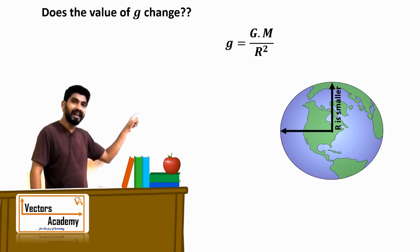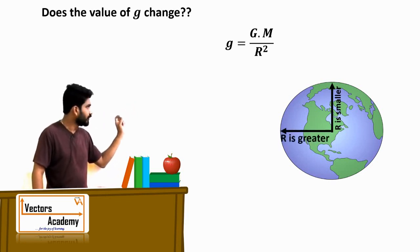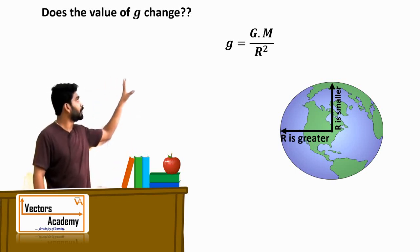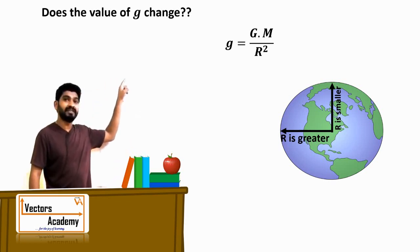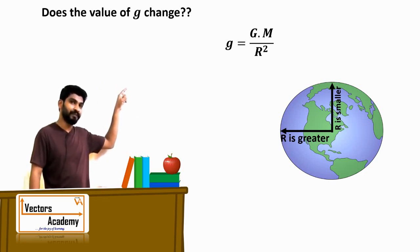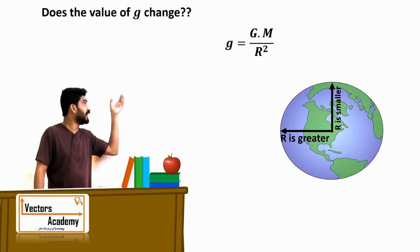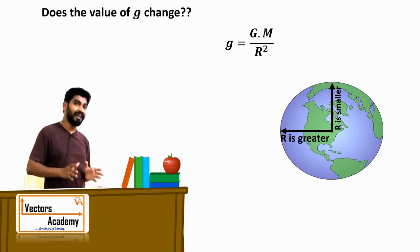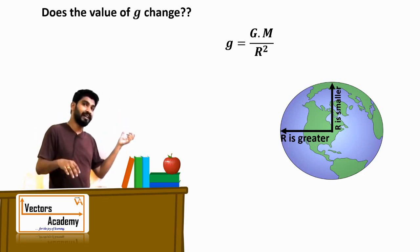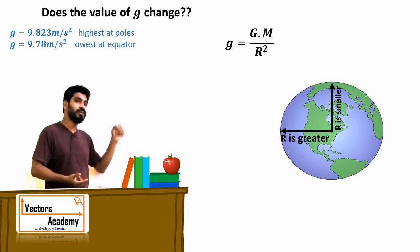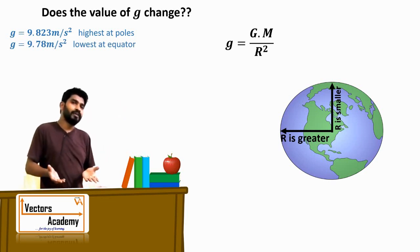Looking at the formula, r lies in the denominator. As the denominator increases, the value of the fraction decreases. Hence the value of g at the equator is smaller, and the value of g at the poles is greater.